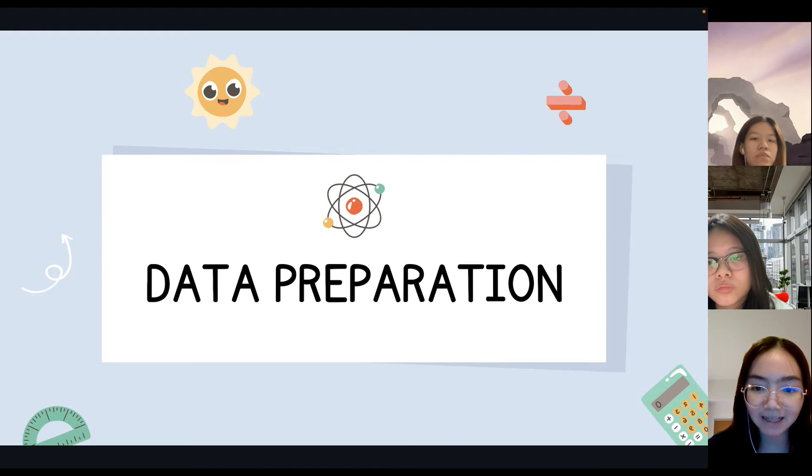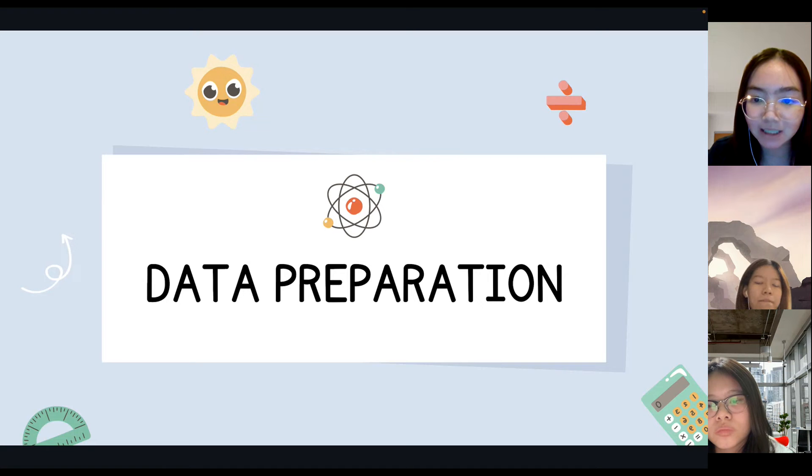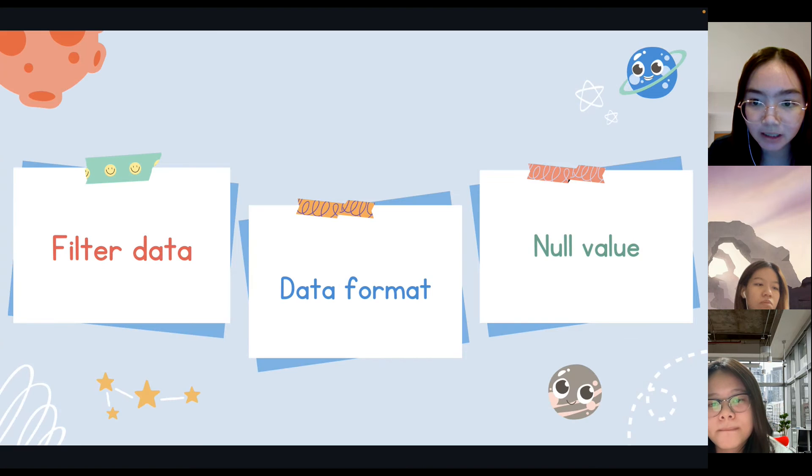In the data preparation, we have three most important things to deal with. First of all, filter the data. We filter the data from the dataset by the country that we are interested in and the features that could be used for the analysis. We decided to focus on our neighboring countries which are Cambodia, Laos, Malaysia, Thailand, and Myanmar.